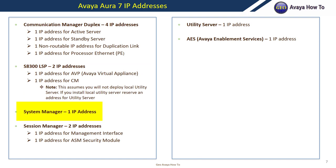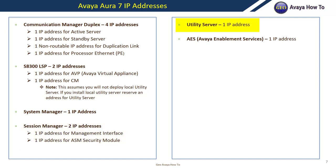For System Manager, you're going to need one IP address. For Session Manager, you will require two IP addresses — one for the management server and one for the Session Manager security module. The utility server will require one IP address, and the AES server will require one IP address as well.